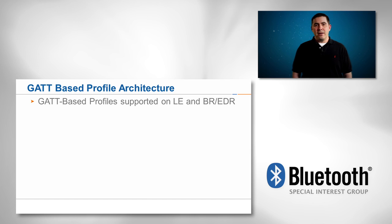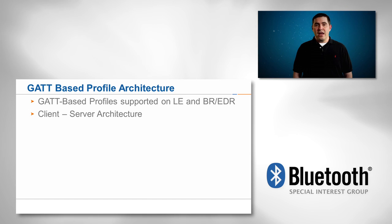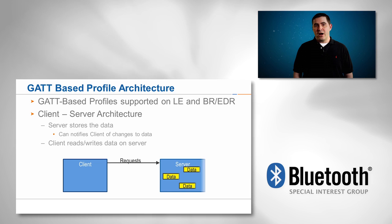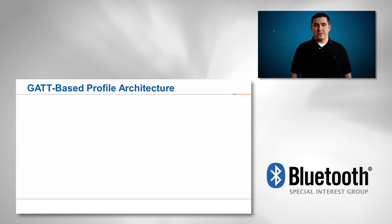The GATT profile uses a client and server architecture and actually defines these as two distinct roles in the GATT profile. The GATT server stores the application data and responds to read and write requests. The server also supports asynchronous notification operations.